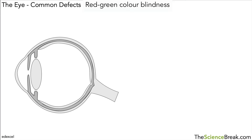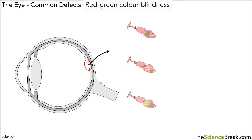Let's see how the eye works under normal circumstances. This is the retina. The retina contains certain types of cells and one set of those cells are called cones, and there are three different kinds of cones.